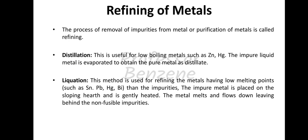The process of removal of impurities from a metal, or purification of metal, is called refining. The first method is distillation. This is useful for low boiling metals such as zinc and mercury. The impure liquid metal is evaporated to obtain pure metal as the distillate.